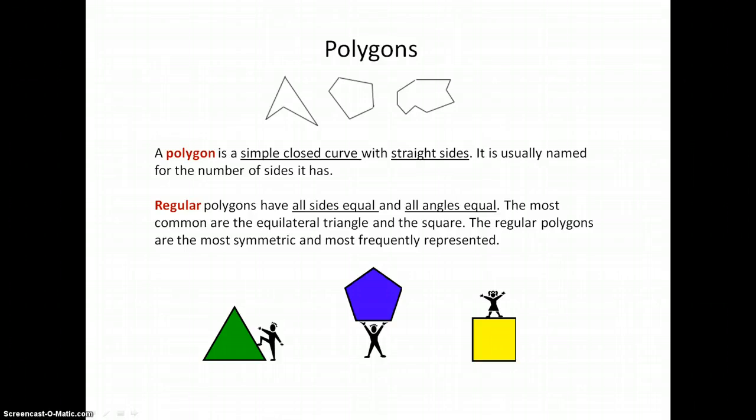Polygons. A polygon is a simple closed curve like we just learned about, but it has to have straight sides. It can't be curvy in the English use of the word. It's usually named for the number of sides it has. For example, a triangle has three sides, like a tricycle has three wheels.